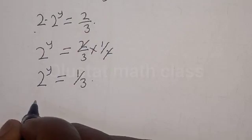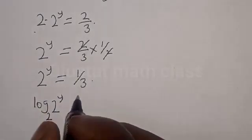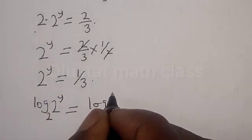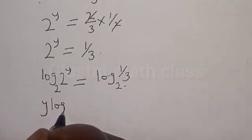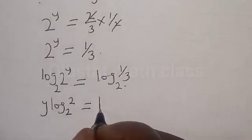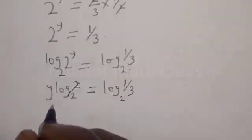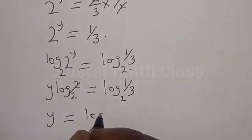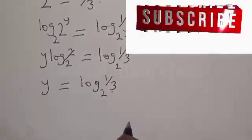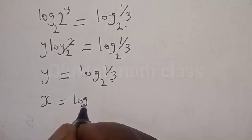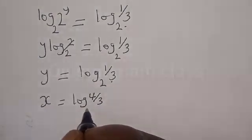Now let's take the log of both sides base 2. We have log base 2 of 2 raised to the power y equals log base 2 of 1 divided by 3. This gives y times log base 2 of 2 equals log base 2 of (1/3). Since log base 2 of 2 is 1, y equals log base 2 of (1/3). Similarly, from equation star, x equals log base 2 of (4/3).